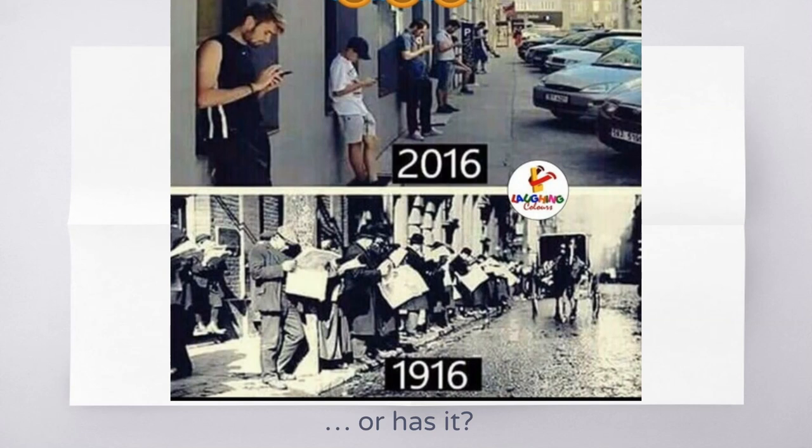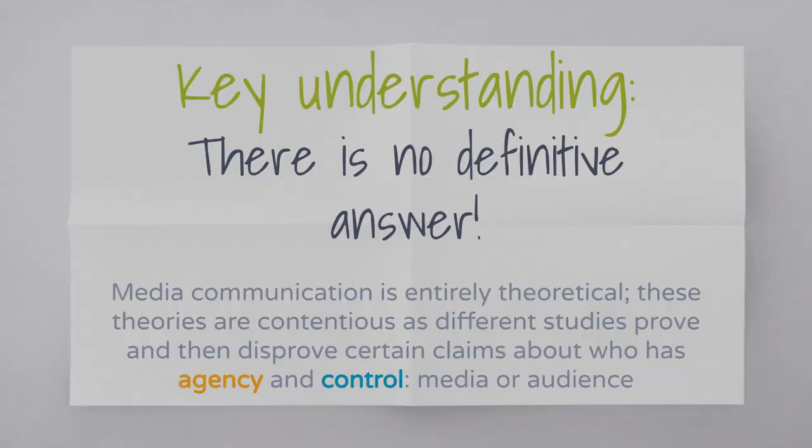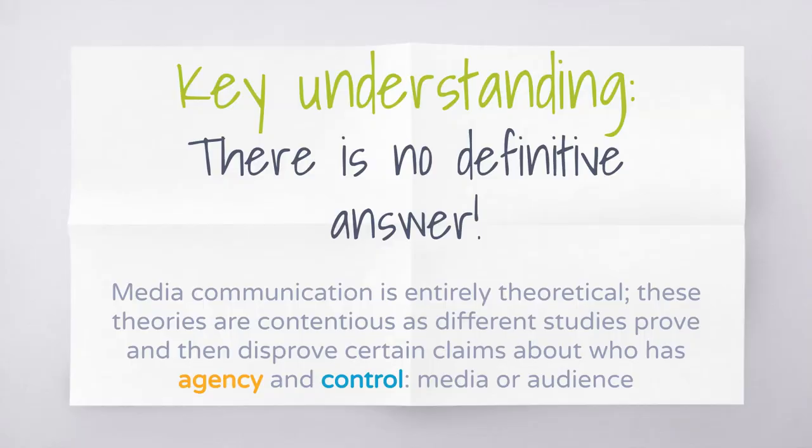Or has it? We can see individuals reading as they stand on the street in 1916 — over 100 years ago — and in 2016. Has that relationship actually changed, or have we just replaced the newspaper with the iPhone? These are some of the questions we'll be wrestling with in this unit. There is no definitive answer; media communication is entirely theoretical. These theories are contentious, constantly debated as different studies prove and then disprove certain claims about who has agency and control — the media or the audience.